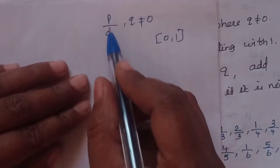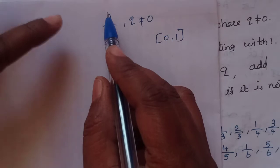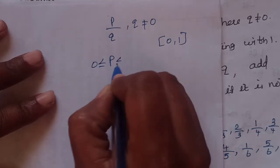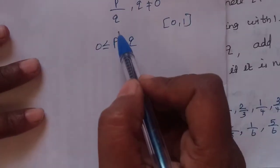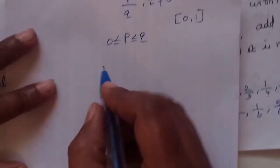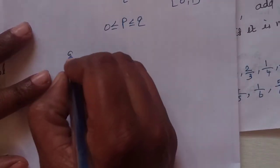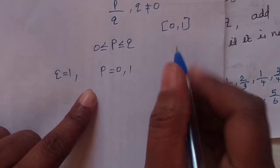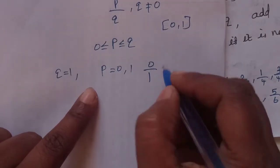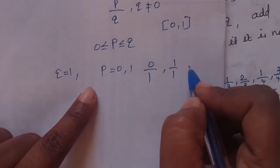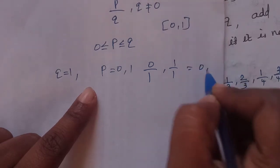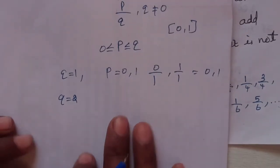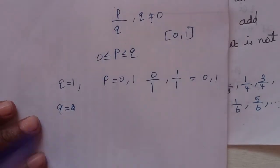P and Q are integers, with P between 0 and Q. We increment Q in steps of 1 starting with Q equal to 1. If Q is equal to 1, then the values that lie between 0 and 1 give us fractions 0 by 1 and 1 by 1. Then if we move to Q equal to 2, the value should include fractions with denominator 2.